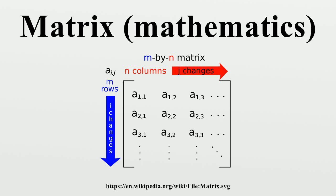The entry in the i-th row and j-th column of a matrix A is sometimes referred to as the (i,j) entry of the matrix, and most commonly denoted as a_{i,j} or A_{ij}. Alternative notations for that entry are A(i,j) or (i,j). For example, the entry of the following matrix A is 5. Sometimes, the entries of a matrix can be defined by a formula such as a_{i,j} equals f.